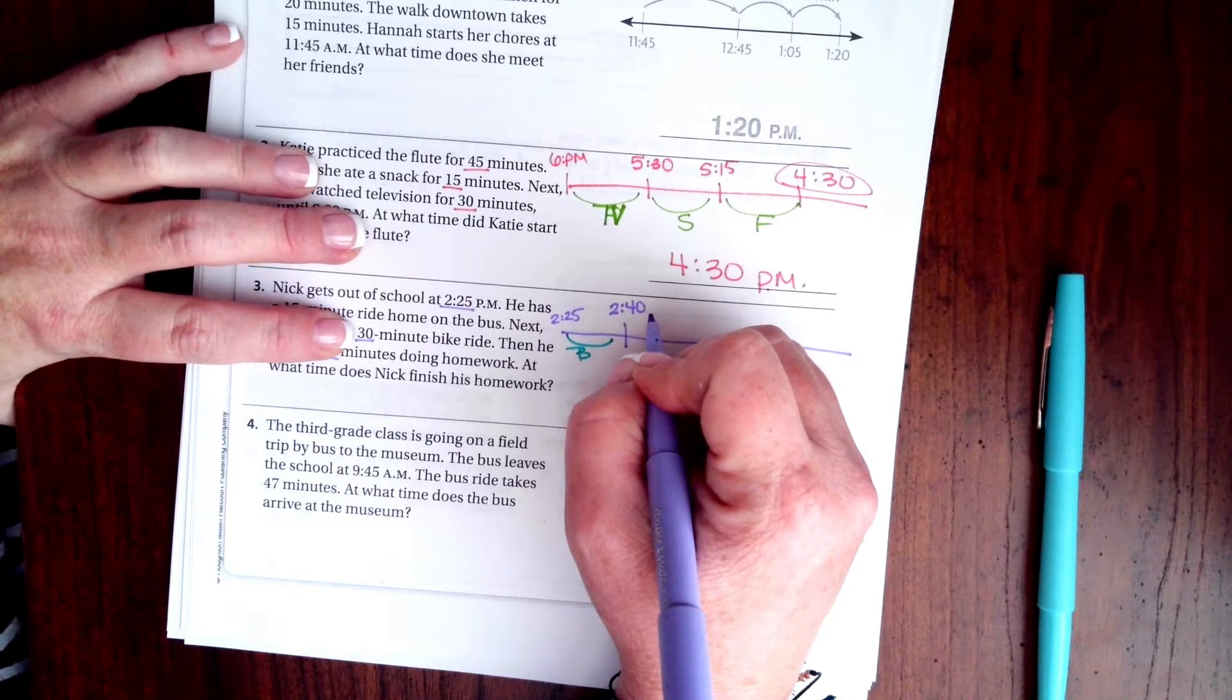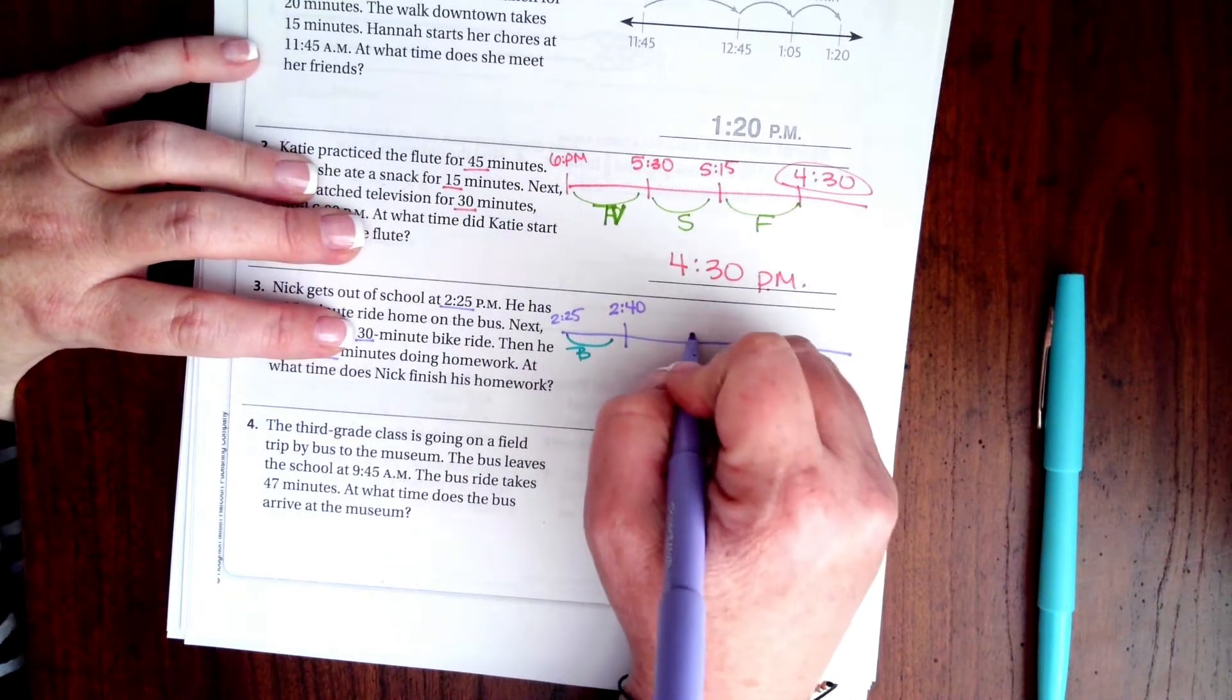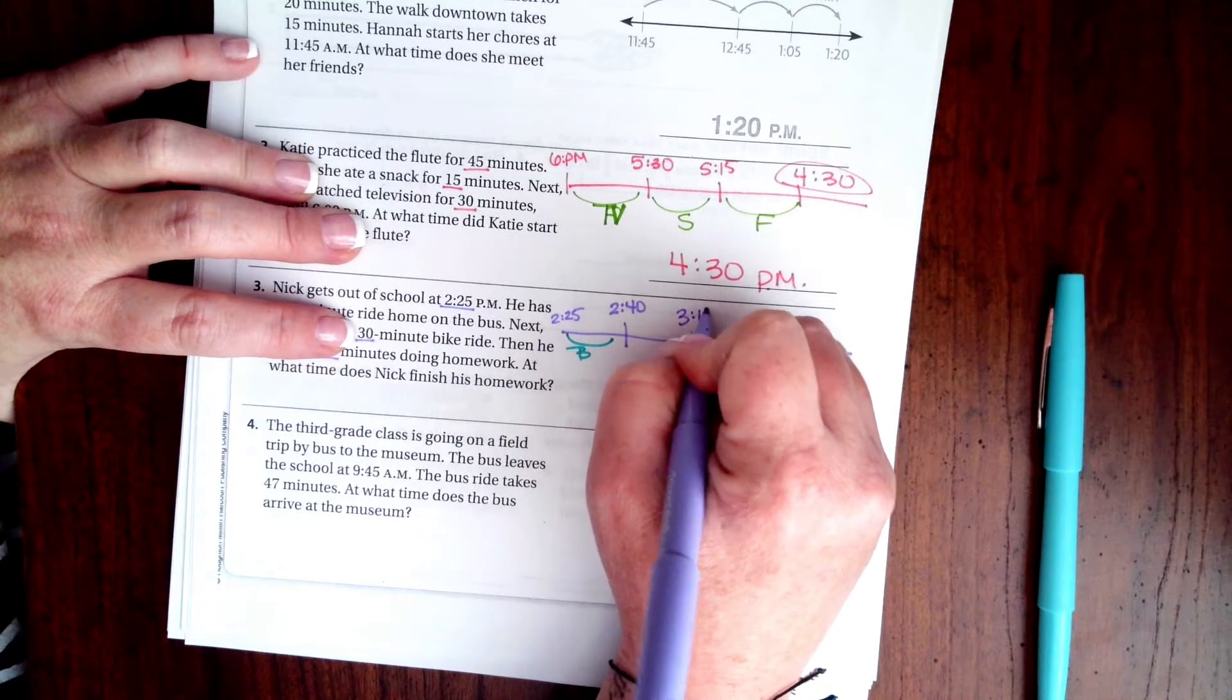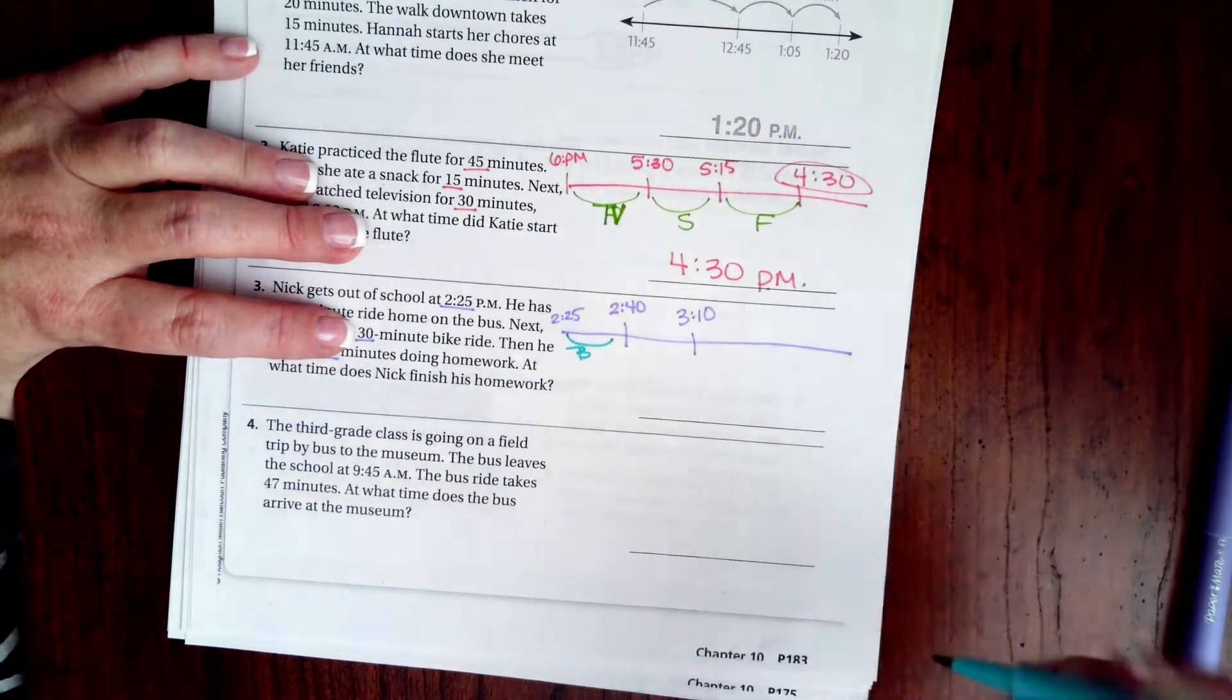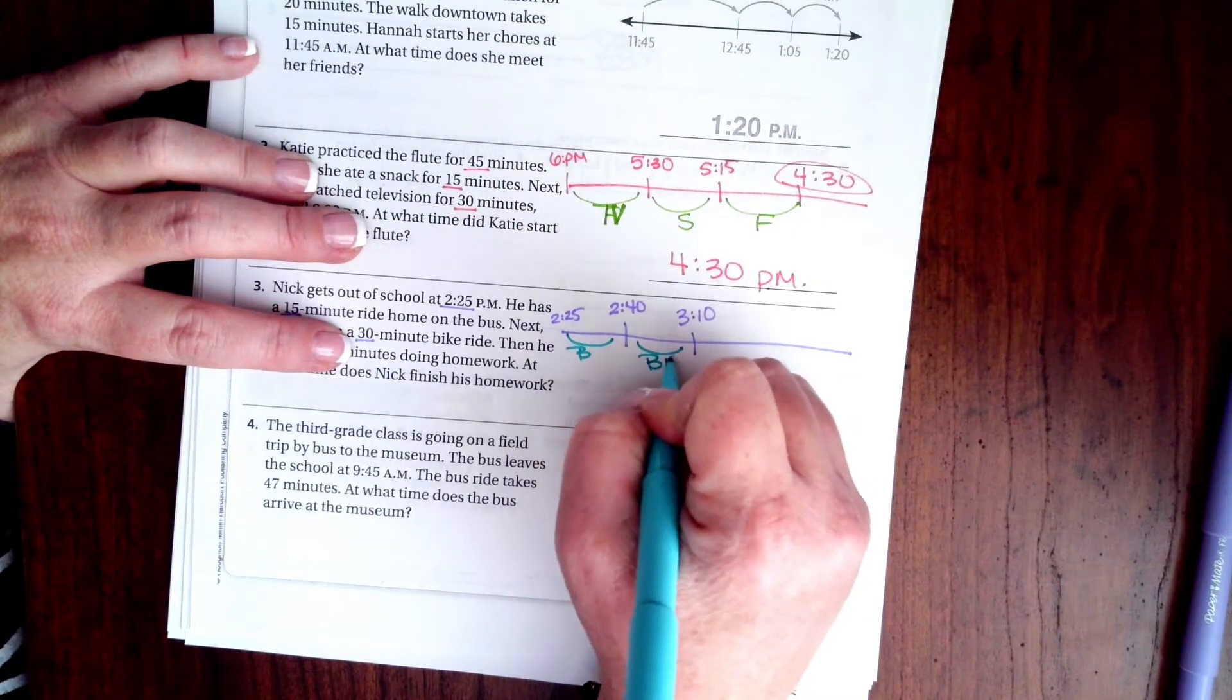It starts over at 60, so that would be 3:10. That's our bike ride.